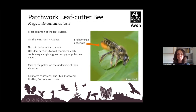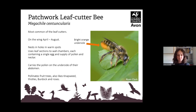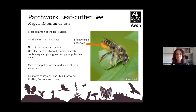The patchwork leafcutter bee is the most common of the leafcutters. They have a bright orange underside and are on the wing from April to August, nesting in holes in warm spots. They use leaf sections — in particular from roses — to make a door for their chambers, each containing a single egg supplied with a little pollen and nectar. They carry pollen on the underside of their abdomen and pollinate fruit trees, knapweeds, thistles, burdock and roses — and yes, they do cut the leaves off roses.